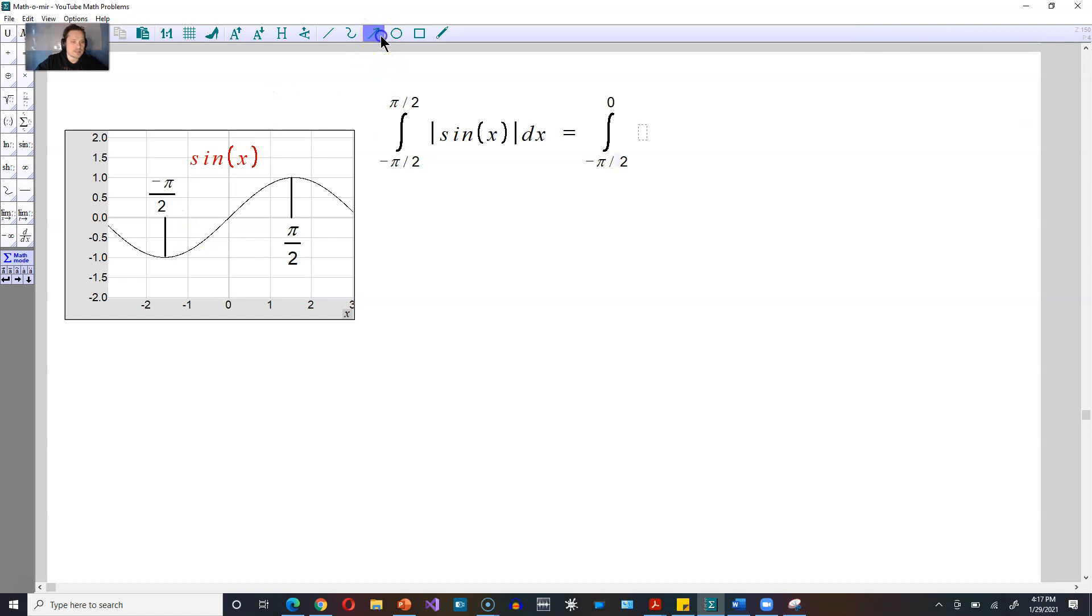If you look in the picture on the left hand side right here, you see the sine function is negative. To take its absolute value you have to multiply it by negative 1, that is what makes it positive. So over here you're going to have negative sine of x and then dx.